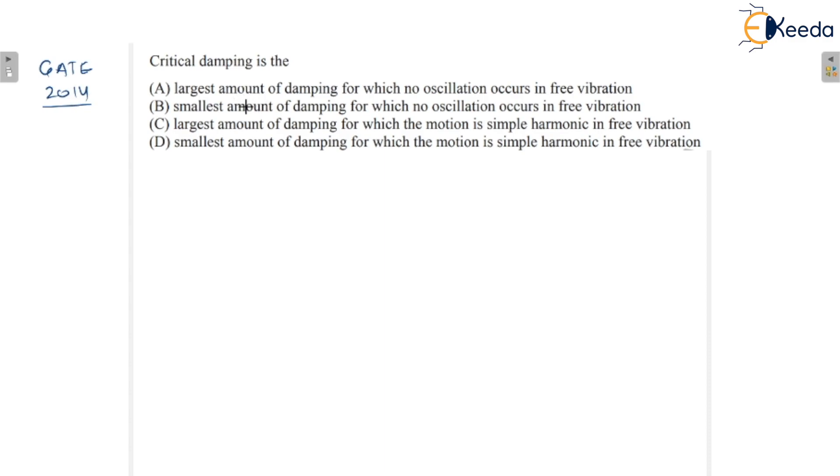Critical damping is the: largest amount of damping for which no oscillation occurs, smallest amount of damping for which no oscillation occurs, or largest amount of damping for which motion is simple harmonic. If I am talking about critical damping, basically we have divided the damping system into three categories.